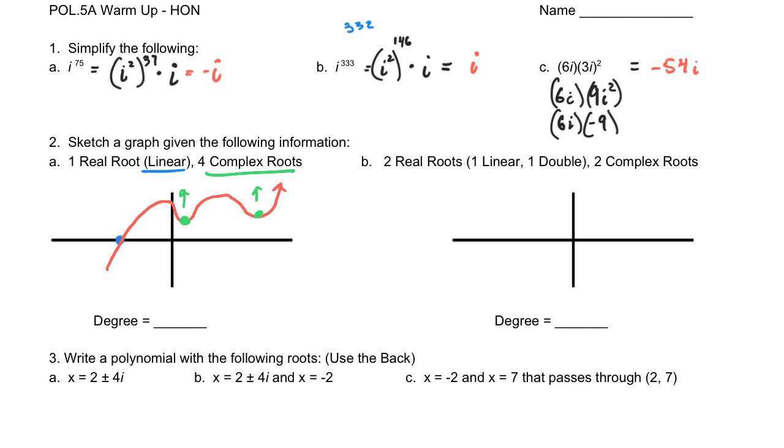For the second example, this time I have two real roots, but one of them is linear, and one of them is a double root, so choose one, it doesn't matter which one you're going through, it's going to have to bounce off it, and so obviously lots of ways to do this, linear root through one of them. Since I have two complex roots, I need to have a parabola opening away, and then you're going to bounce off that other one. This piece here gives us the two complex roots.